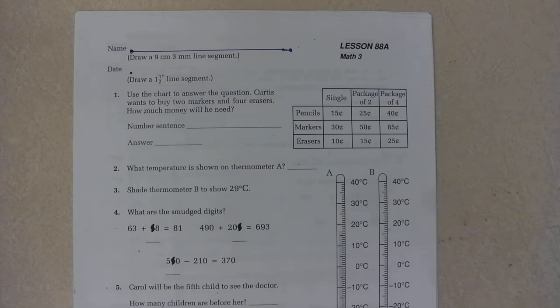Hello, boys and girls. Today we are working on lesson 88 in our Saxon math book, and the first thing we need to do is to draw a 9 centimeter, 3 millimeter line segment.